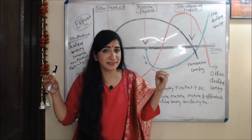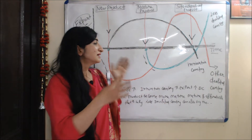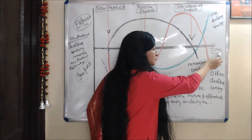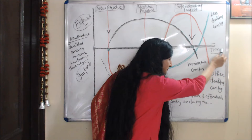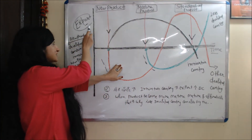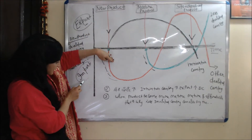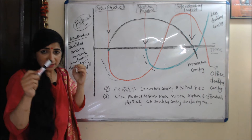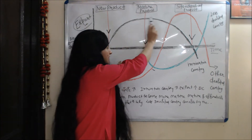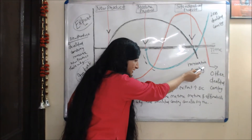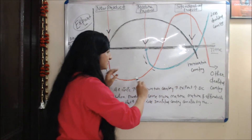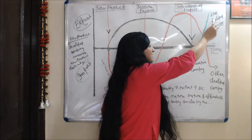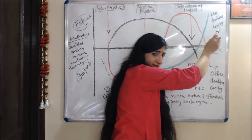Now we understand this theory with the help of a diagram. On the x-axis we take time period; on the y-axis the positive side represents export and the negative side represents import. There are basically three curves: the black curve represents the innovative country, the red curve represents other developed countries, and the green curve represents less developed countries.